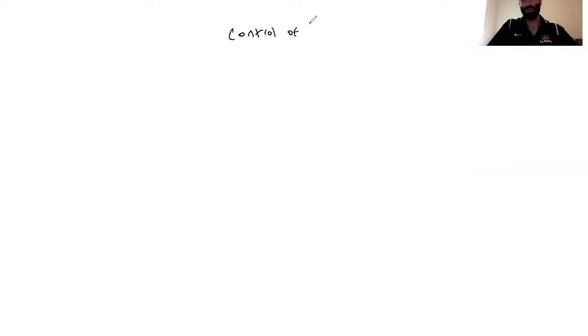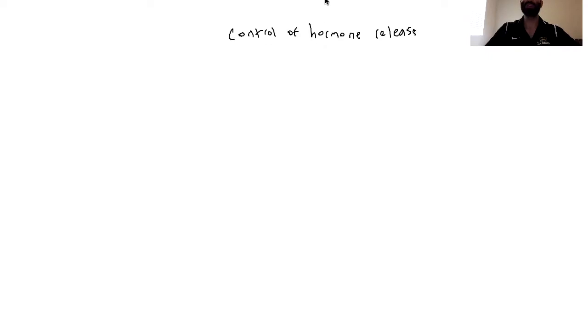Now we'll talk about the control of hormone release, which is very important. Hormones are powerful chemical messengers because they can target almost every cell in the body — many cells have receptors for them, and they promote wide-ranging systematic responses. This needs to be tightly regulated. We need to maintain homeostasis, which in this context is the preferred set point of a circulating hormone. The body does a very good job of ensuring homeostasis is maintained — if it's not, something pretty drastic is wrong with the pathway.